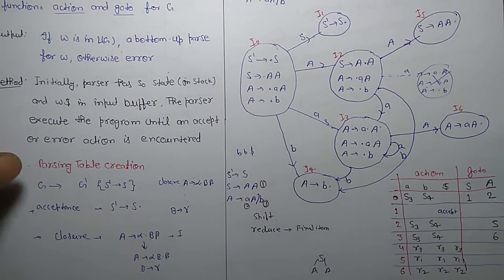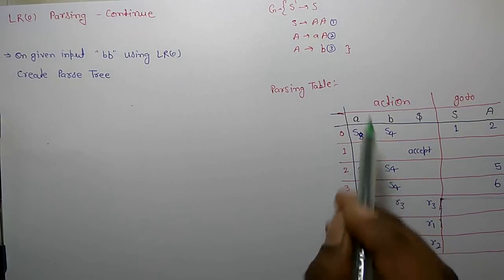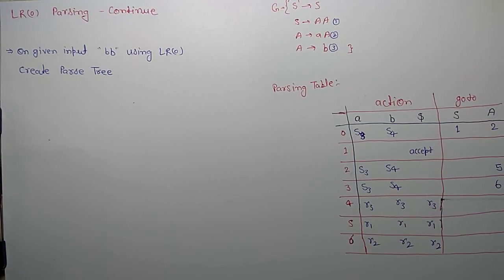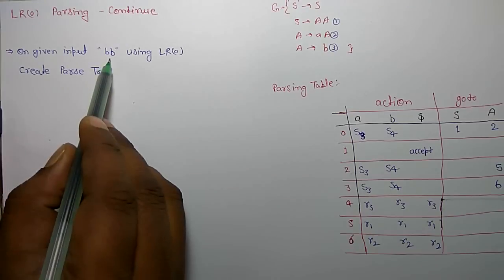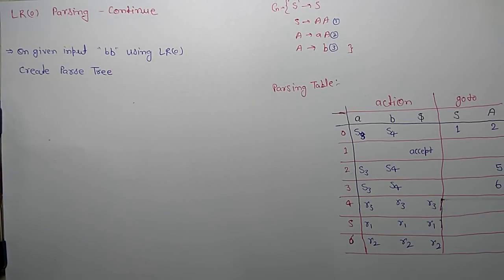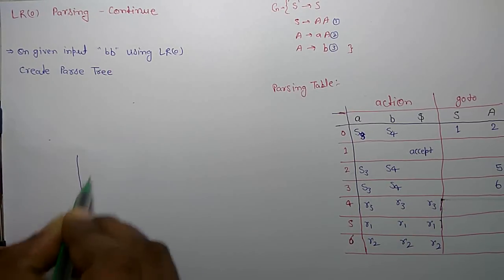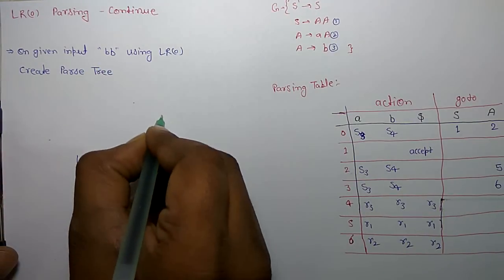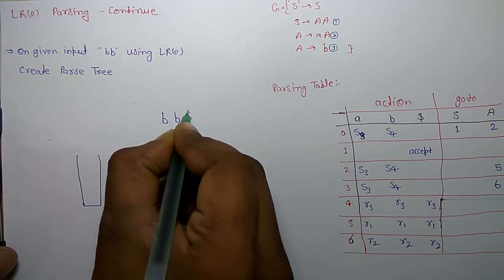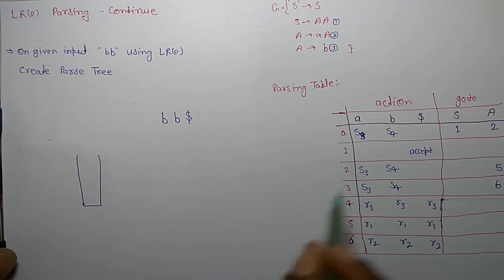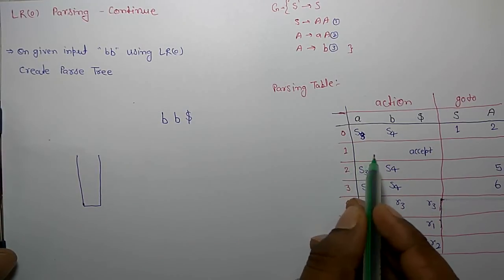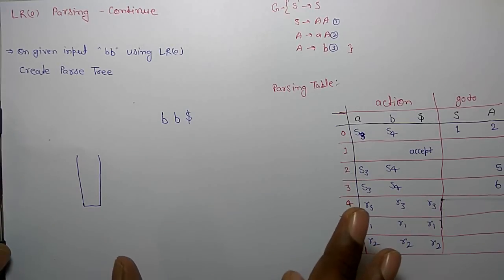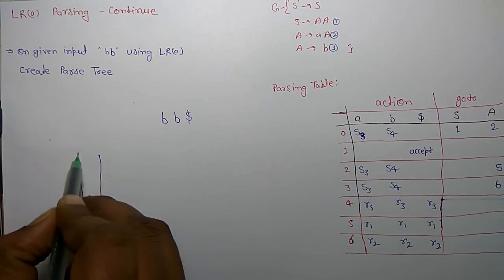Let's take one example. This was the previous grammar where we created the parsing table. For creating a parse tree on a particular input string, we require a stack. I am going to create a stack, input frame — the input is BB ending with dollar. The parsing table I am going to use, and the parsing algorithm is the same for all types of LR parsers for creating output.